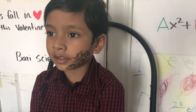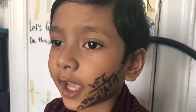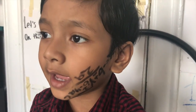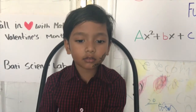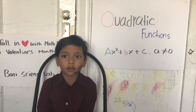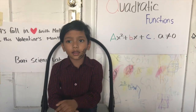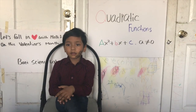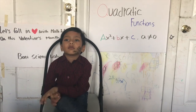The quadratic equation comes in the form of AX squared plus BX plus C, and A will never be zero. If A is greater than zero, the parabola is upward, and if A is less than zero, the parabola is downward.